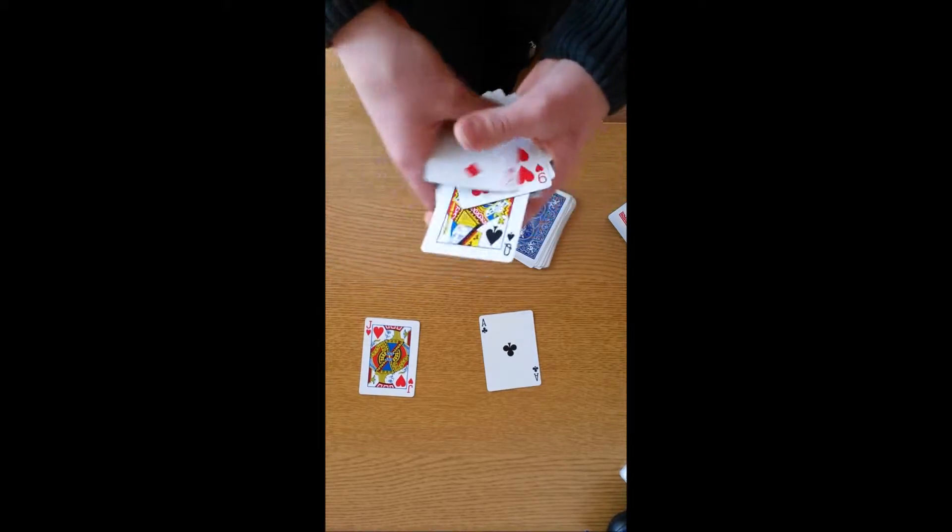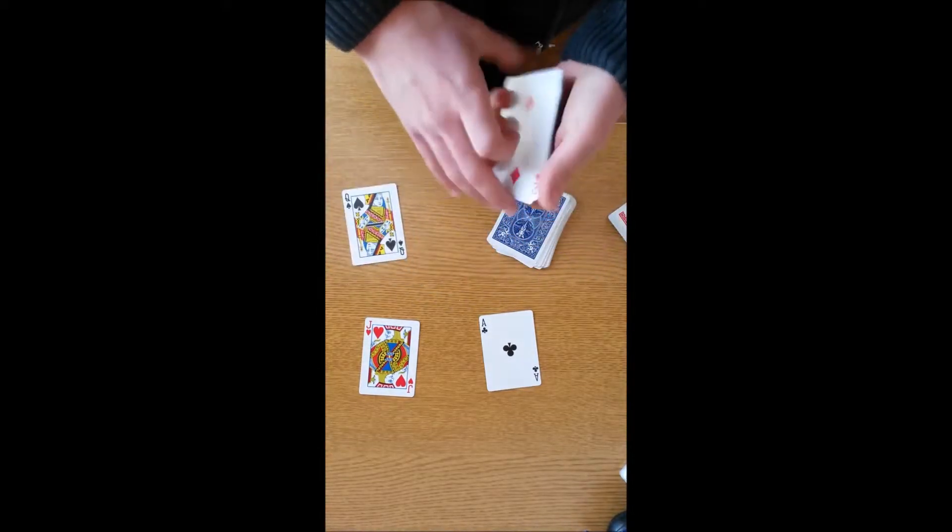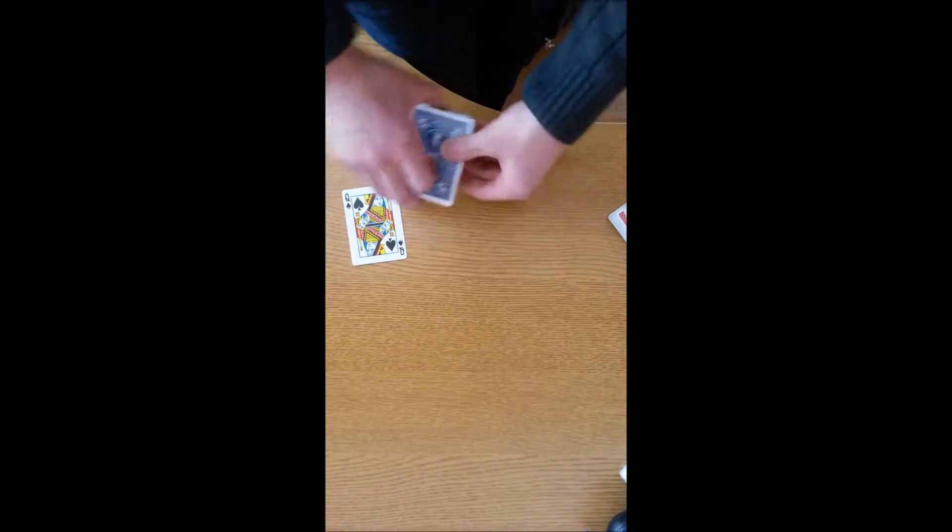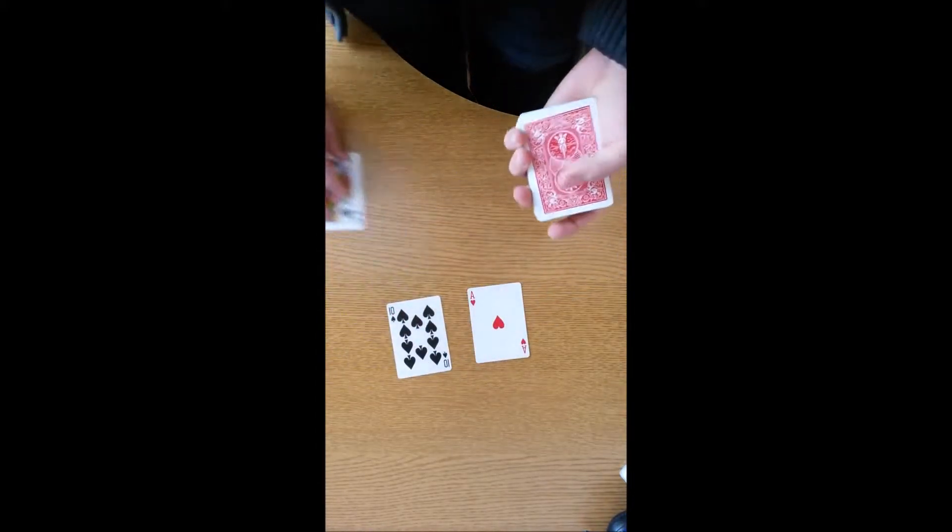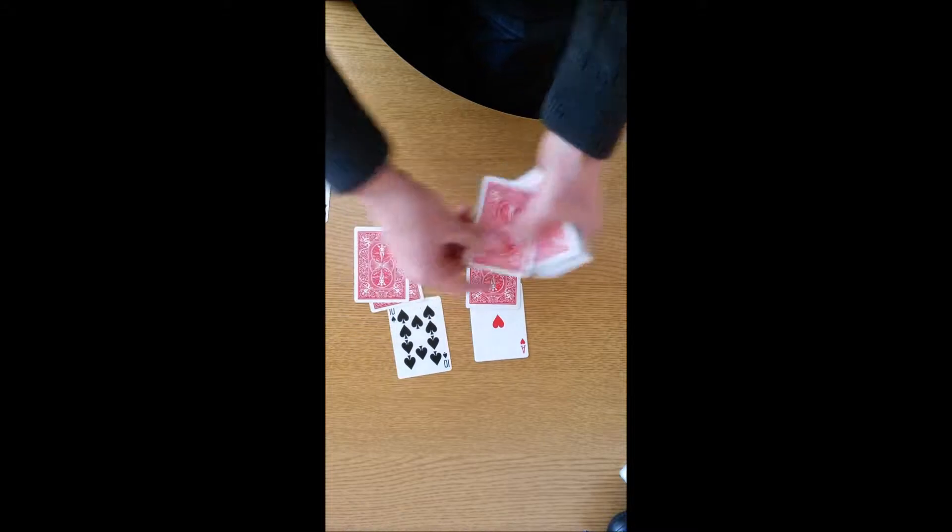We put that card aside. We do the same thing with this deck of cards. We take one red card, one black card, and one black card again. We separate them.